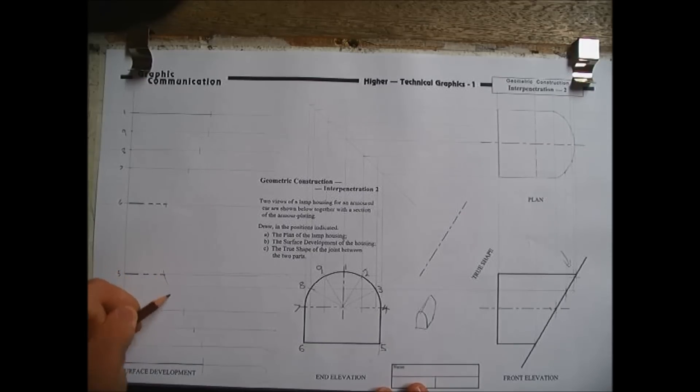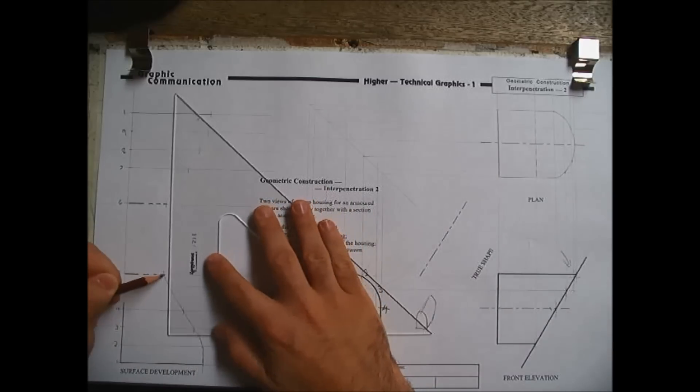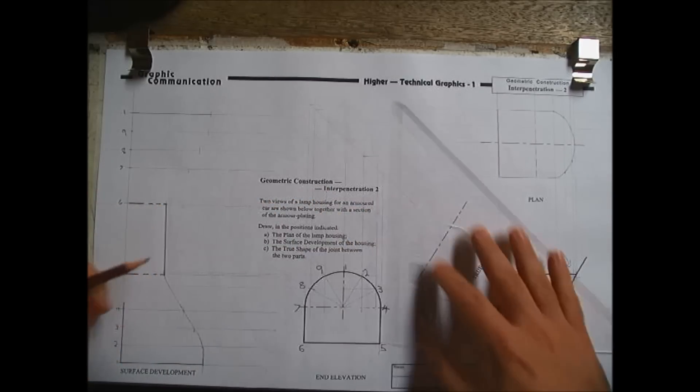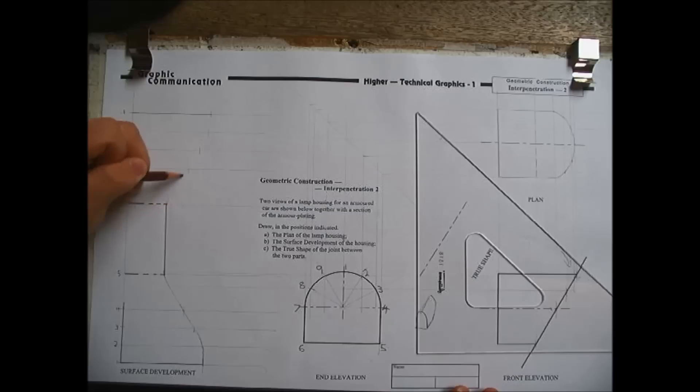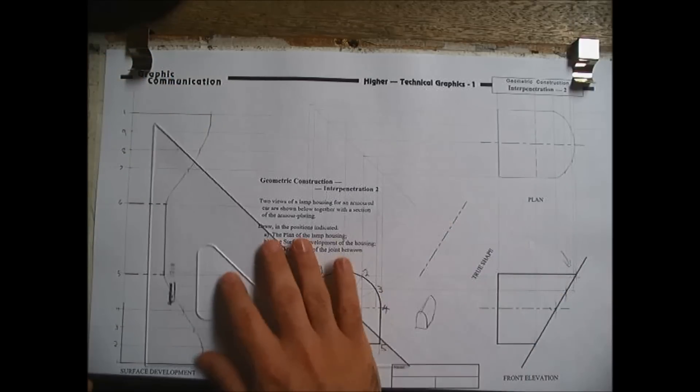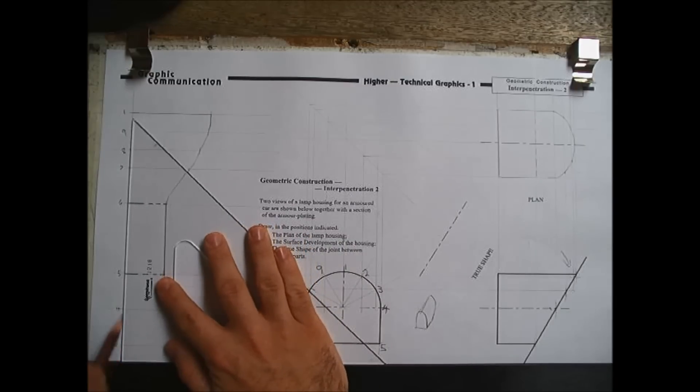So, freehand, the curve. Remember, you can turn the board if you find it easier to join together points. For the use of the camera, I'm not going to turn the lines around. Remember your outlines. Outline, outline, outline, outline.